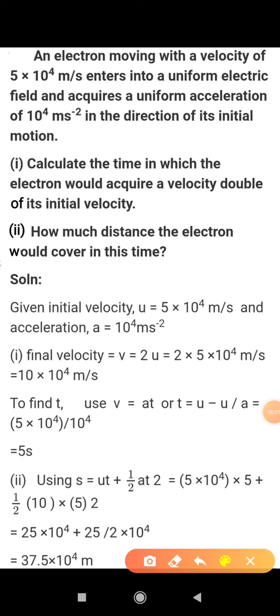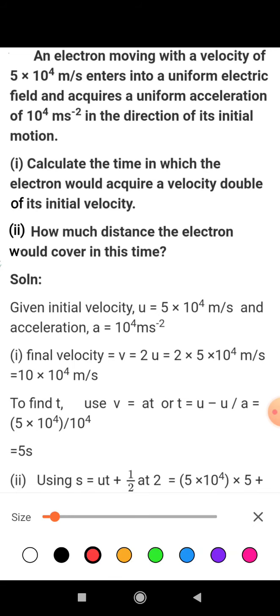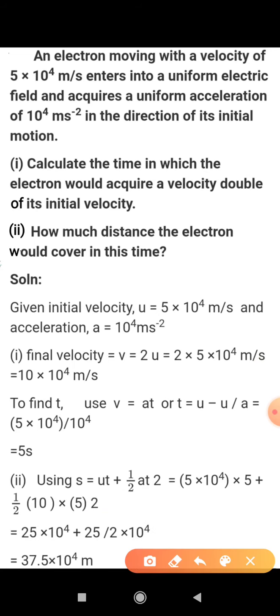Good morning everyone. Today we are going to discuss a numerical problem from the motion chapter. In this numerical they have given an electron moving with a velocity of 5.0 × 10⁴ m/s that enters a uniform electric field and acquires a uniform acceleration in the direction of its initial motion.